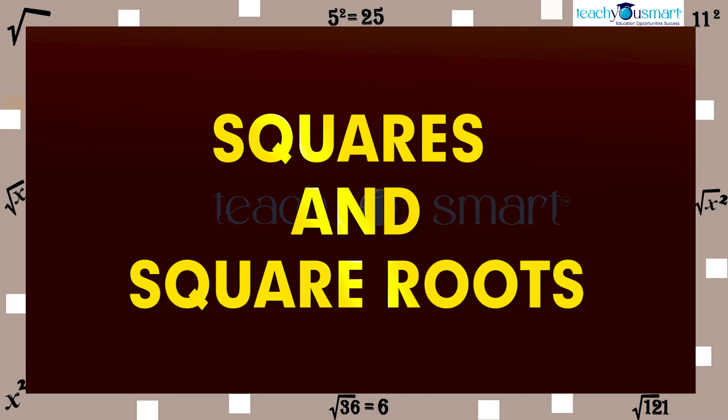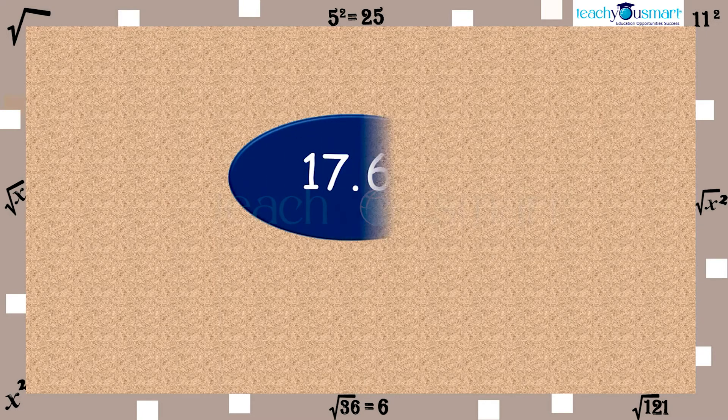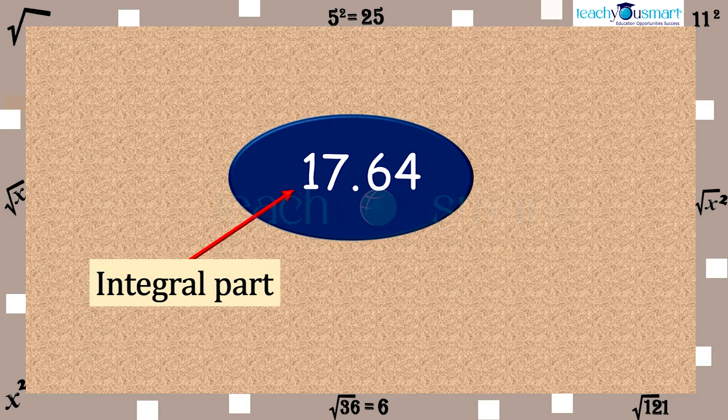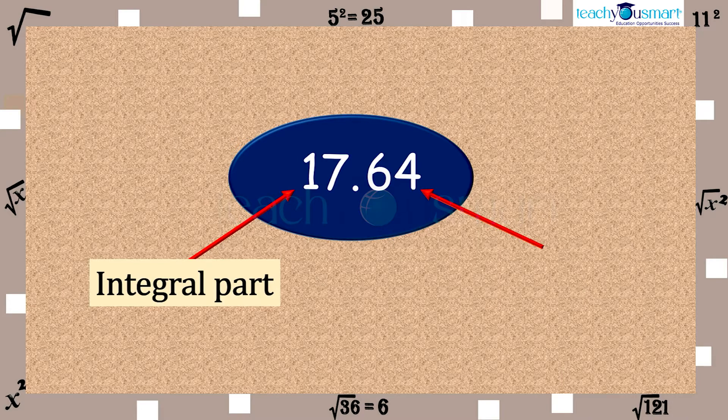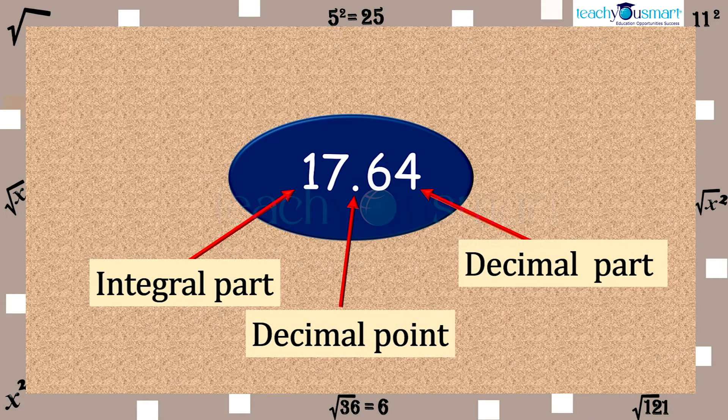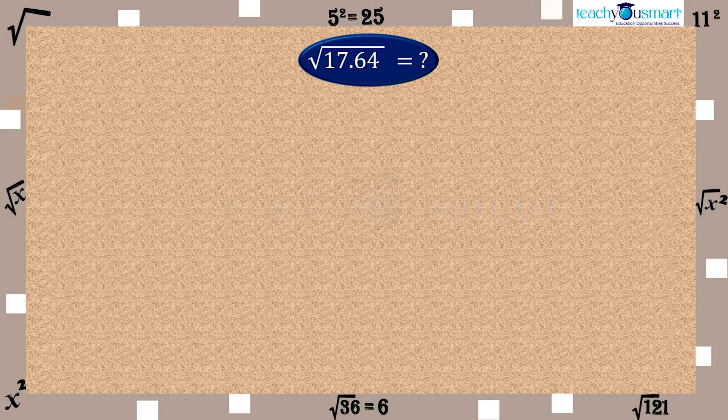Today we are going to discuss the square root of decimal numbers. Look at the decimal number 17.64. In 17.64, 17 is an integral part and 64 is the decimal part.